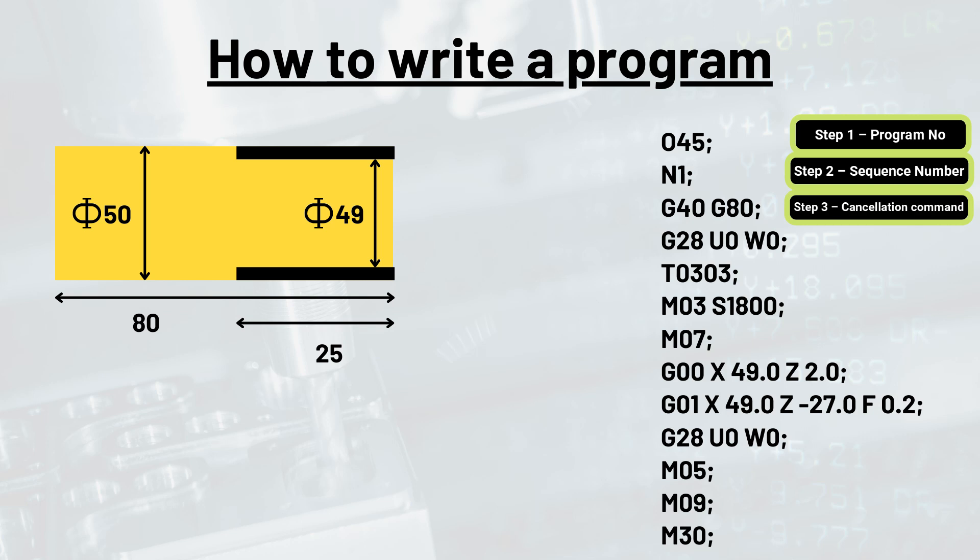The third step is cancellation command. In this step we cancel some pre-existing commands in the system, like that of G40 series which is for tool nose radius compensation and G80 series. This is a precautionary measure to avoid any mishaps and accidents, but it is not mandatory. You can skip this particular line of code.